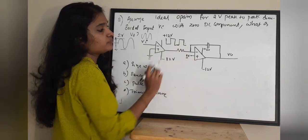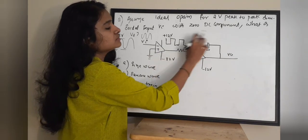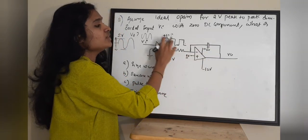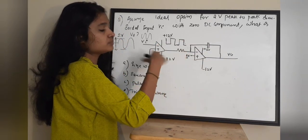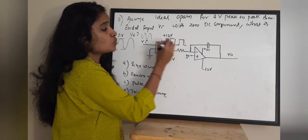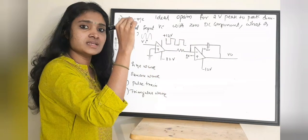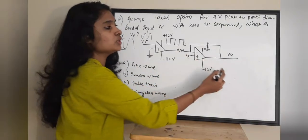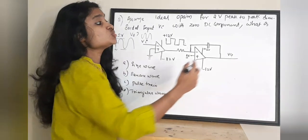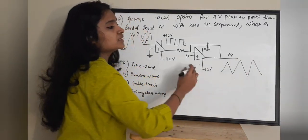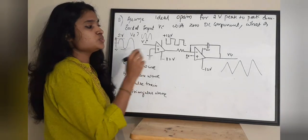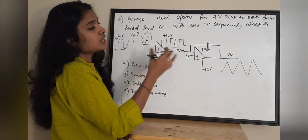This square wave is given to the second operational amplifier, which is connected to the output via a capacitor. When the positive peak of the square wave arrives, the capacitor charges, and during the negative cycle of the square wave it discharges. The charging and discharging of the capacitor forms your V out. The charging and discharging waveform of a capacitor is a triangular wave.